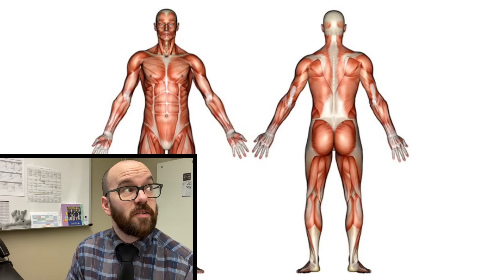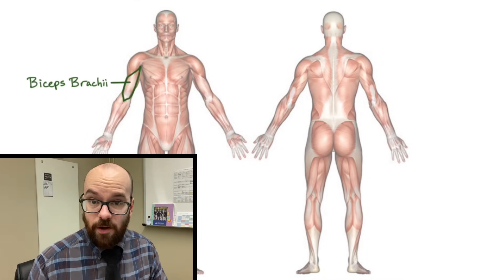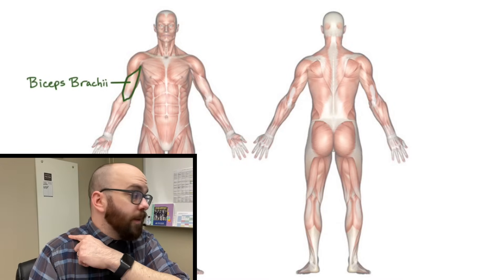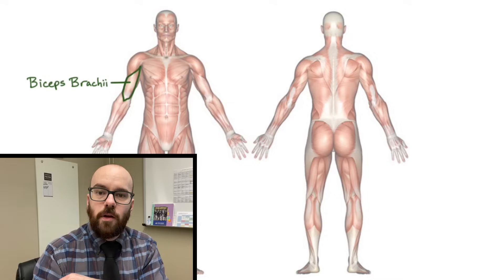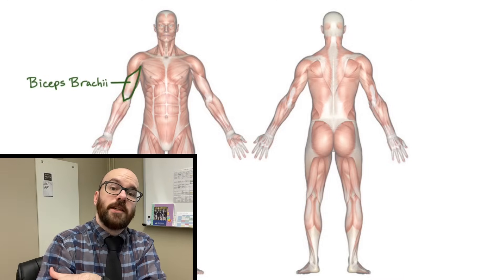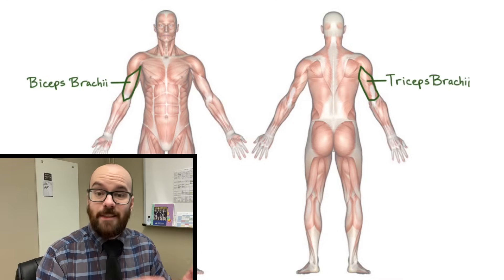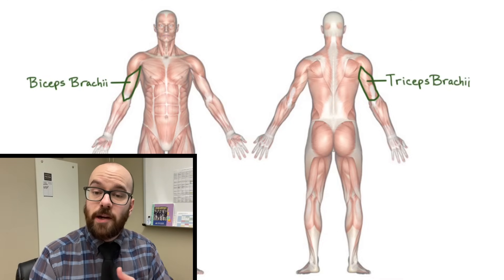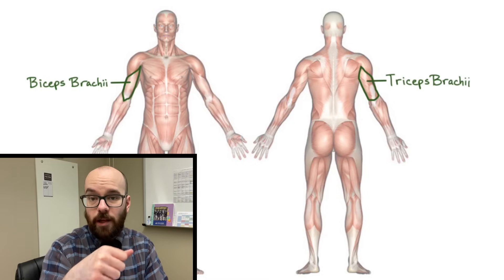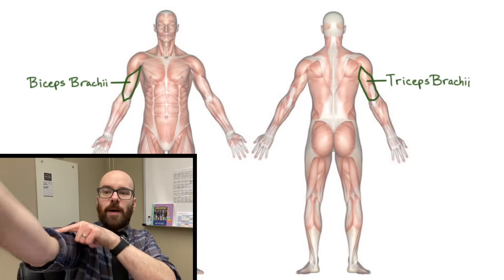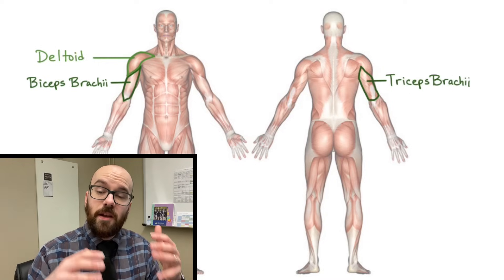Now let's look at some muscles, moving from the arms to the shoulder to the torso and then down to the legs. The biceps brachii flexes the elbow joint. Its origin is the scapula and its insertion is the radius. Its antagonist is the triceps brachii, whose action is to extend the elbow joint. The triceps brachii originates at the proximal end of the humerus and attaches to the proximal end of the ulna, pulling on the ulna to straighten the elbow.